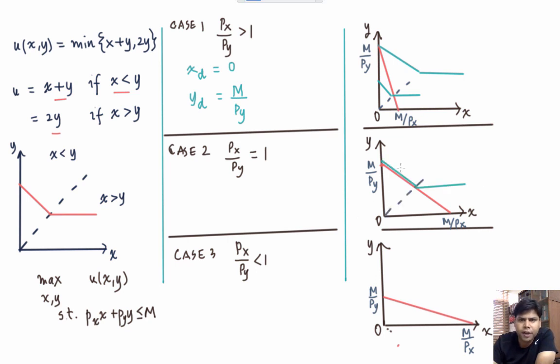then we are going to get that the highest possible IC will coincide with the budget line on this portion and will lie above the budget line in this region.